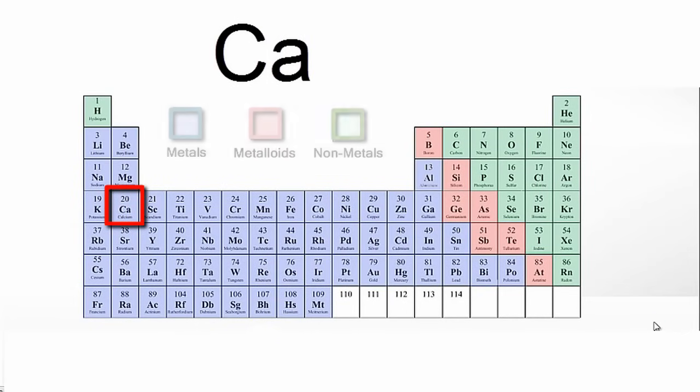Well, you can see that calcium is on the left-hand side of the periodic table, so that's going to make it a metal.